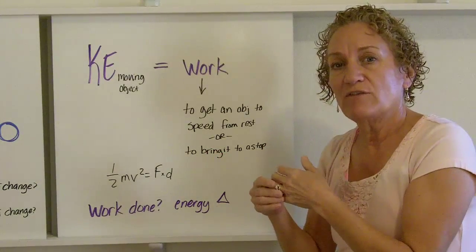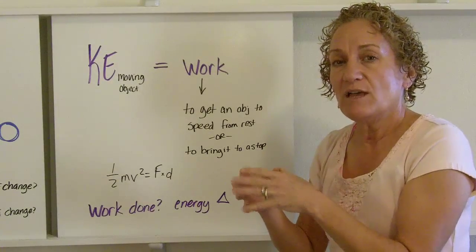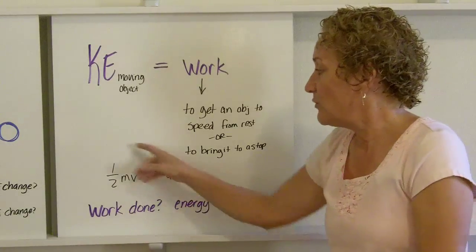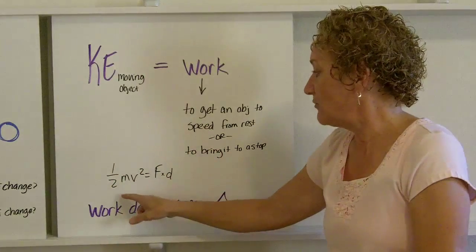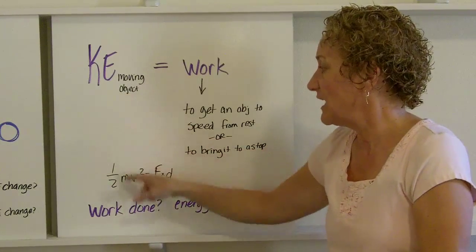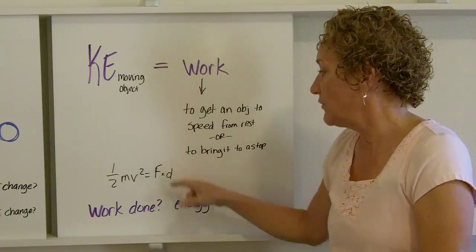So something is traveling at 45 kilometers per hour and you want it to be zero. It's going to take a certain amount of work to get it to stop. So by putting these two things together, we're saying one-half mv squared, which is the equation for kinetic energy, is equal to force times distance, which is the equation for work.